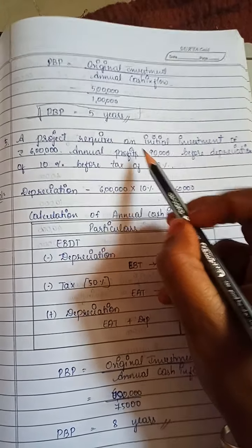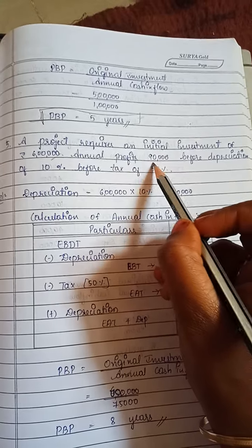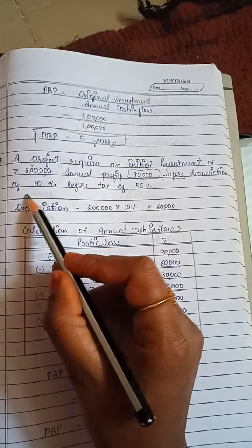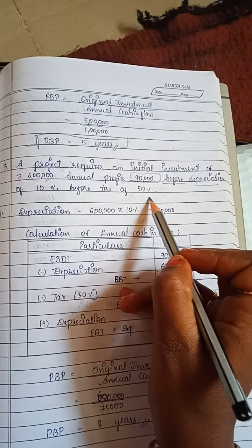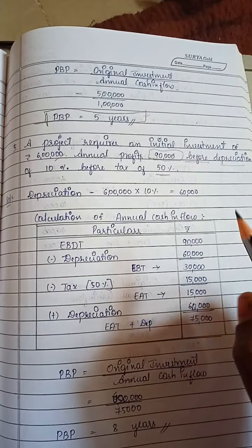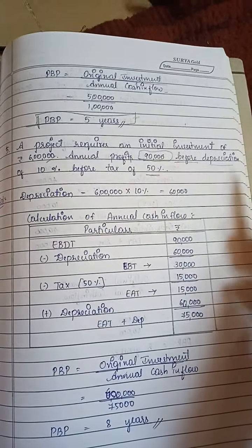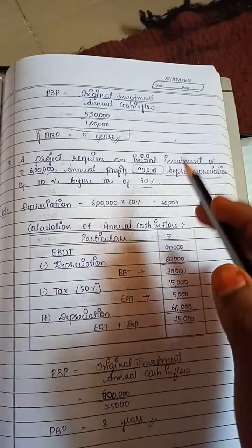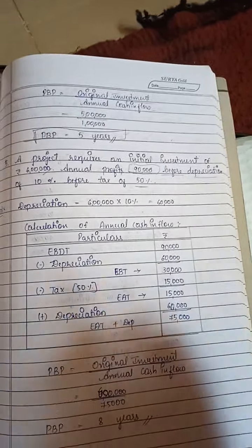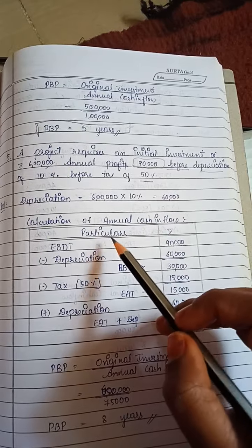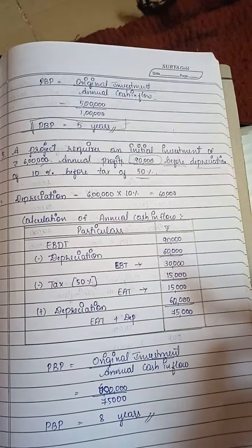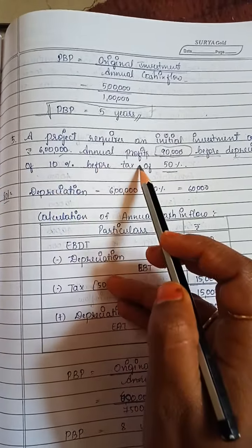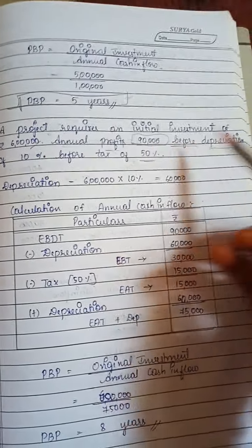A project requires an initial investment of rupees 6 lakhs. Annual profits given are 90,000 — and this is before depreciation and before tax of 50 percent. So here we need to first deduct depreciation, then deduct tax, and then add back depreciation.